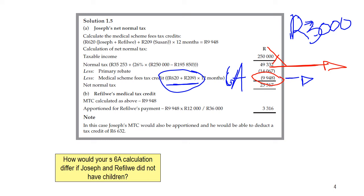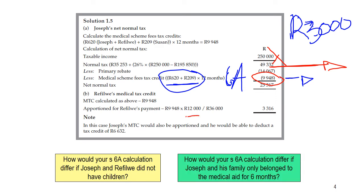For Part B, where spouses contribute to one medical aid scheme: of the R3,000 total, Refuliwe contributes R1,000, so she will qualify for a portion of the Section 6A credit. We first calculate the full amount of R9,948 for the three members — main member plus two dependents — and then do an apportionment based on total contributions versus her contribution of R1,000. Similarly, Joseph's medical scheme tax credit must also be apportioned, since he contributed R2,000. That concludes Section 6A.